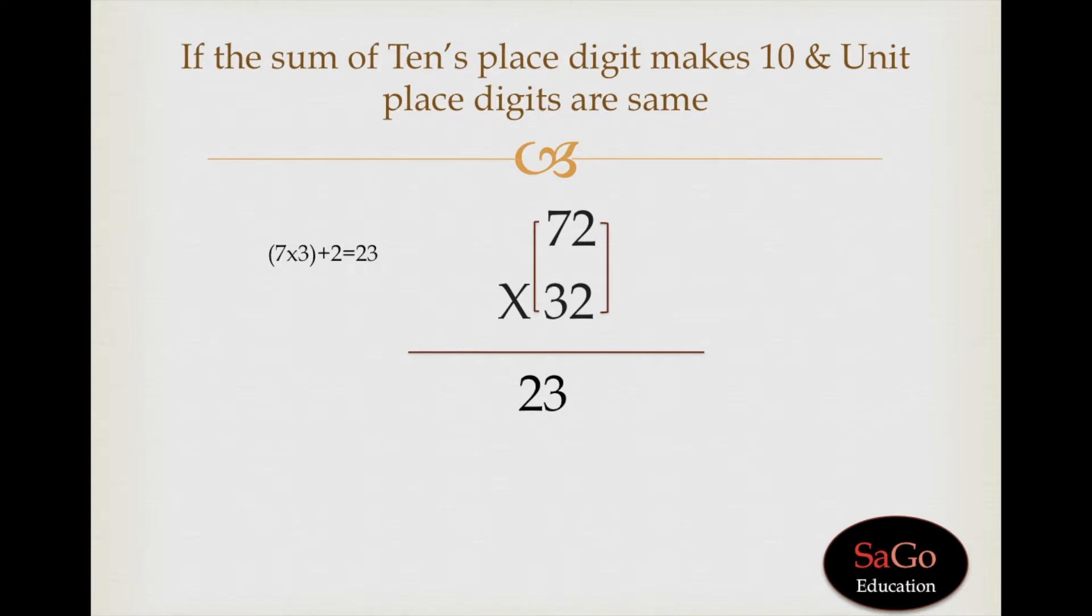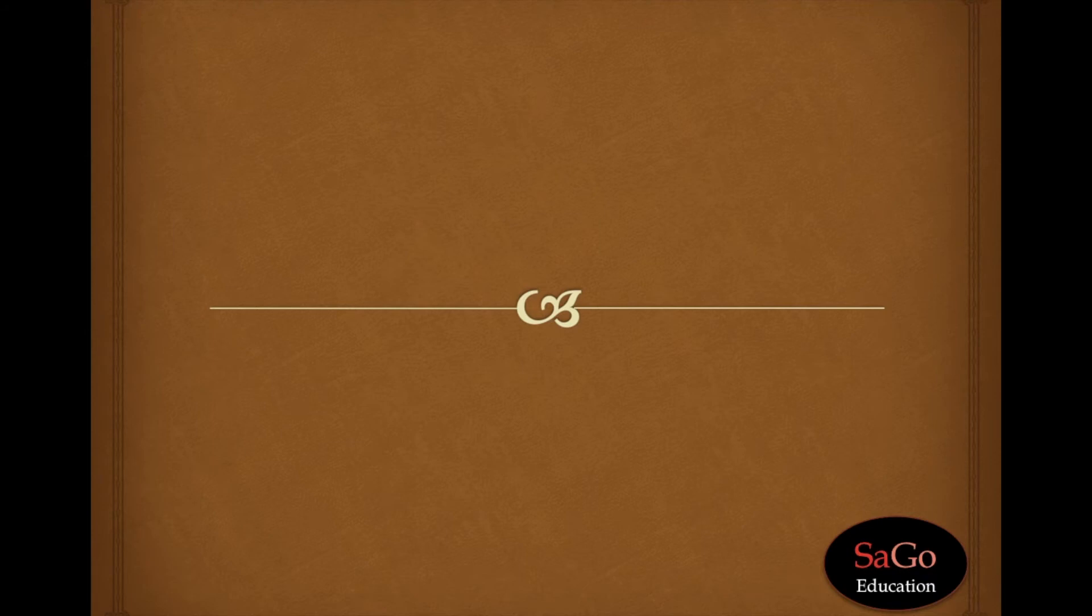But we cannot write single digit after multiplying ones places, so we'll have to prefix 0 before 4. So rather than writing 4 we will write 04. So 2304 is the answer.